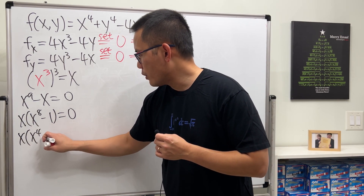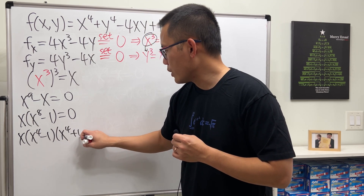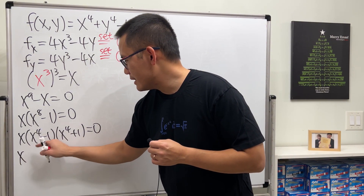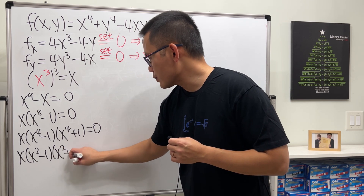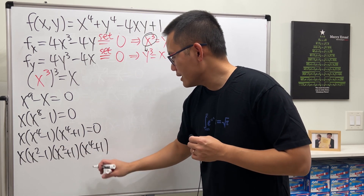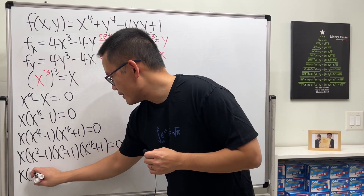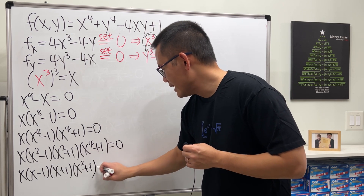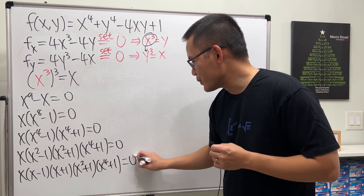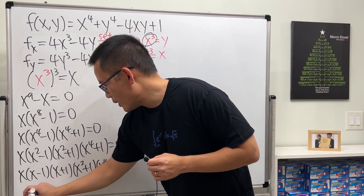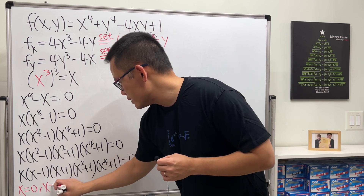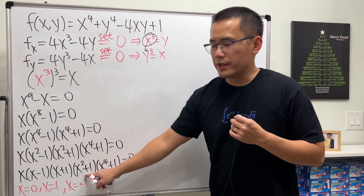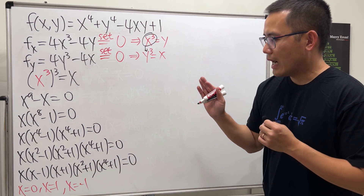Treat x⁸ − 1 as a difference of two squares in x⁴: we get x(x⁴ − 1)(x⁴ + 1) = 0. Continue factoring: x(x² − 1)(x² + 1)(x⁴ + 1) = 0, then x(x − 1)(x + 1)(x² + 1)(x⁴ + 1) = 0. This gives x = 0, x = 1, x = −1 as real solutions (the others yield imaginary roots).